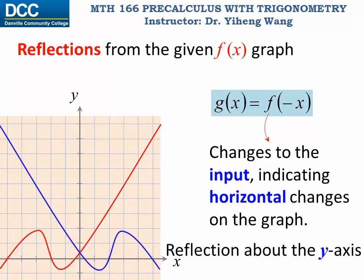Both shifting and reflections are known as rigid transformations, because the graph has been moved or flipped, but the overall shape and ratio are not changed.